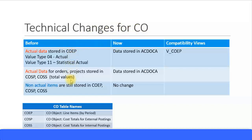I've put two columns here showing how data was stored before and how it's stored now, along with compatibility views. For actual data stored in the COEP line items table for controlling, there are two types: actual with value type 04 and statistical actual with value type 11. Before, this was stored in the COEP table, but going forward it will be stored in the ACDOCA table. Any old programs or reports pointing to the COEP table can use the compatibility view V_CEP to point to ACDOCA.